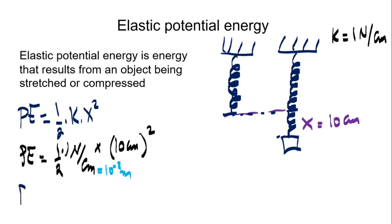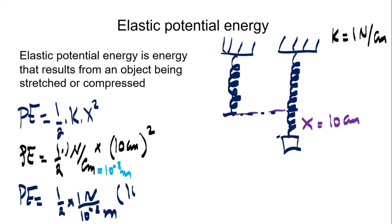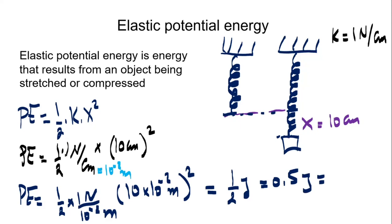To find the potential energy in joules: one half times 1 Newton per 10 to the negative 2 meters, times 10 times 10 to the negative 2 meters, everything squared. We get 10 to the negative 1 squared over 10 to the negative 2, which simplifies to one half joules, or 0.5 joules.